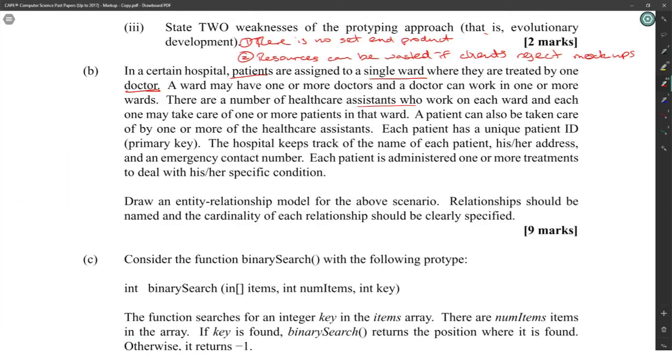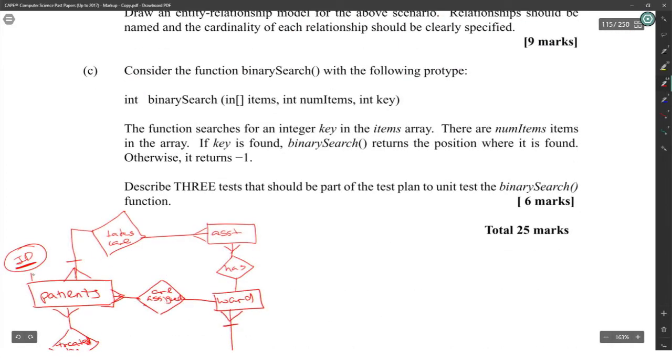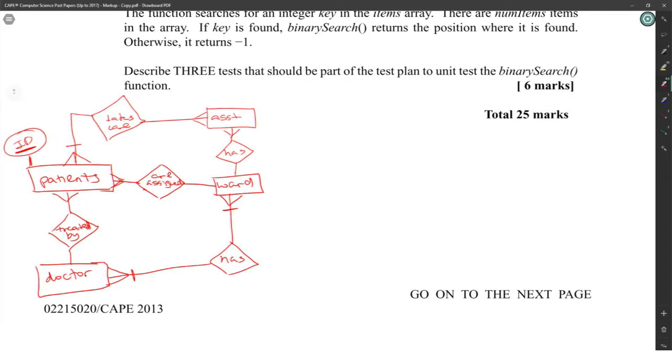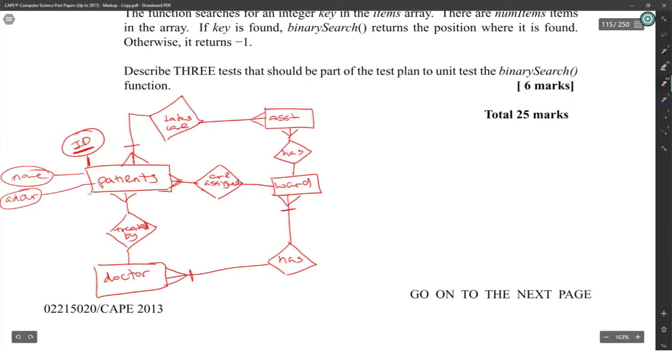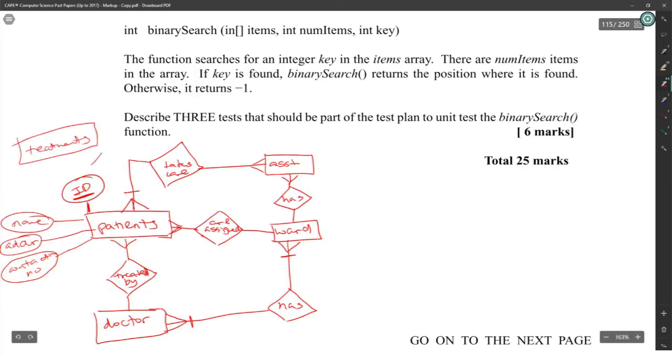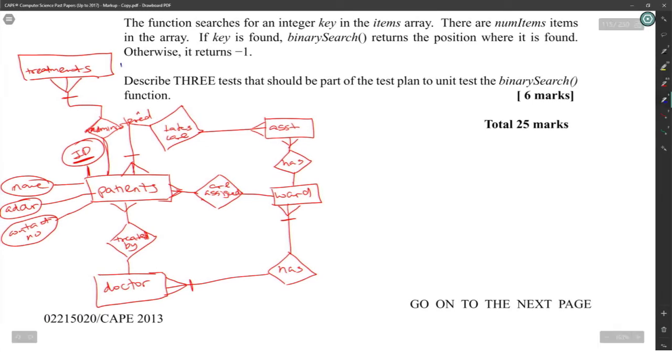This is just a many-to-many kind of thing. Each patient has a unique ID, this is always a free mark, just give an ID and underline it. The hospital keeps track of the name of each patient, address and emergency contact number. ID, name, address and contact number. Cool. Each patient is administered one or more treatments to deal with a specific condition. Treatments administered, one or more treatments. For each entity, one, two, three, four, five marks already. One mark when you put any primary key. Six, seven for putting the other attributes. Eight marks. The next two marks for cardinalities.